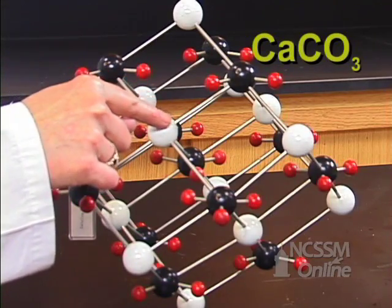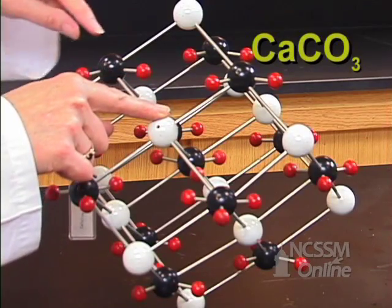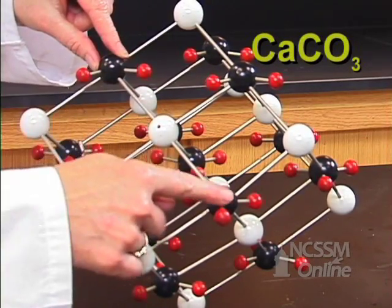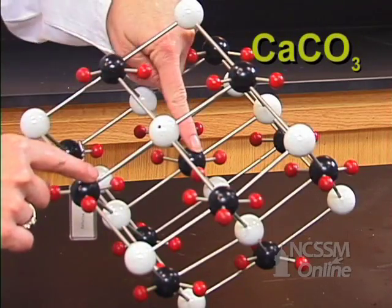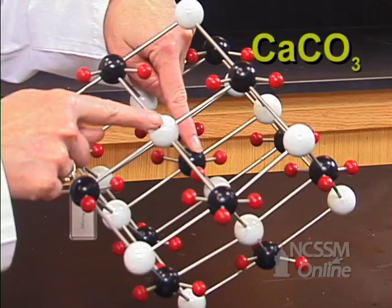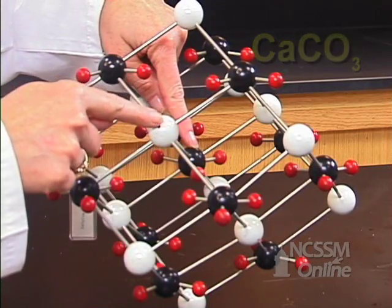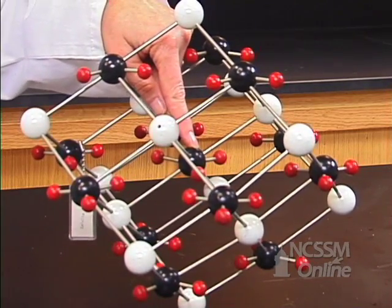You see there's a calcium here, and to that calcium is attracted one, two, three, four, five, and then there would be another one out this way. So that would be attracted to six negative ions.